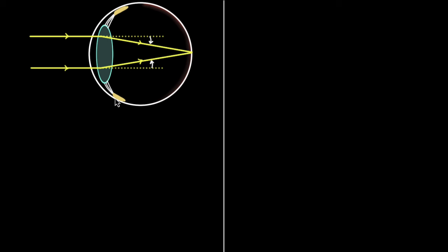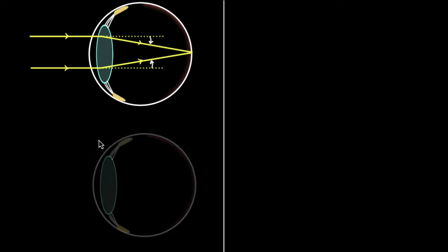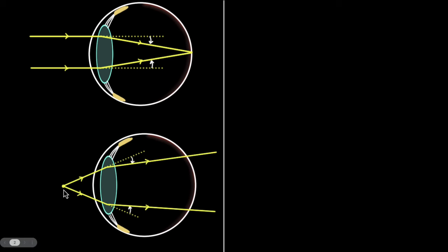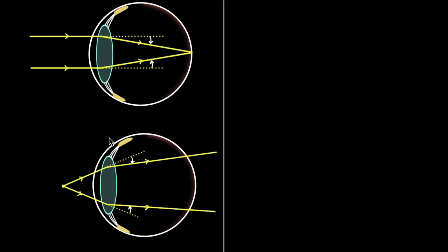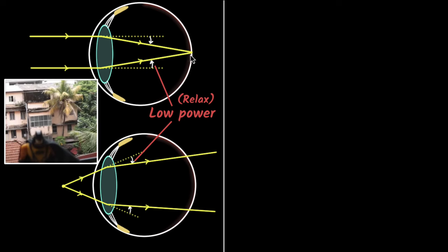Now let's see what happens when this relaxed eye is looking at things that are close by. When things are close by, the bending here is exactly the same amount as before. What do you notice? Now the rays of light are no longer focused on the retina. Because when things are close by, the incident rays are no longer parallel, and so if you bend by the same amount, it's not enough to focus on the retina. This is why when your ciliary muscles are relaxed, your lens has very low power, and therefore you are able to see things that are far away, but things close by are not getting focused on your retina.